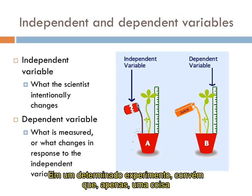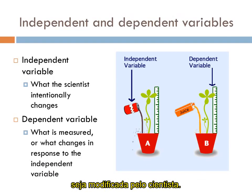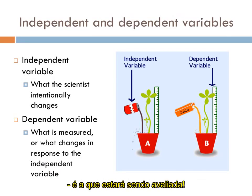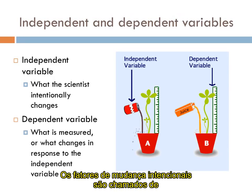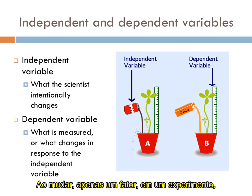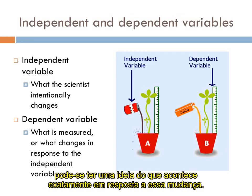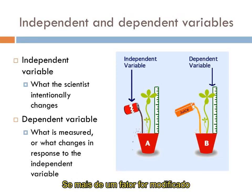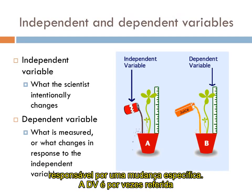In a given experiment, there should be one single thing that is modified by the scientist, and one particular thing that's being measured. The intentionally changed factor is called the independent variable, or IV. By changing just one factor in an experiment, the experimenter can get an idea of exactly what happens in response to that change. If more than one thing is modified at a time, there is no guaranteeing what is responsible for a particular change.